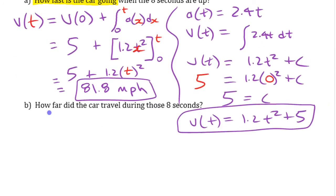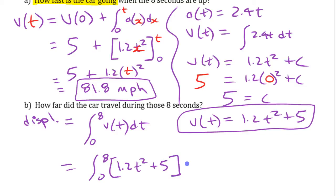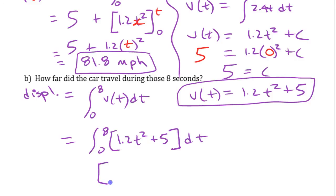Now for the second part of this problem: how far did the car travel during those eight seconds? The displacement equals the net change in position, which is the integral from zero to eight of the velocity function. So we integrate 1.2t² + 5 dt from zero to eight.